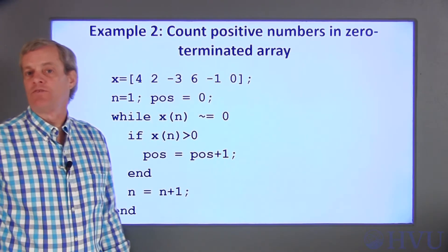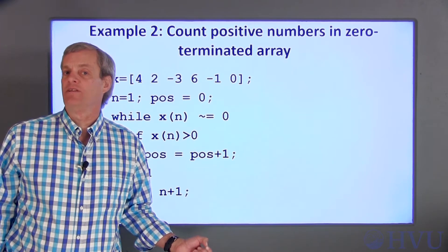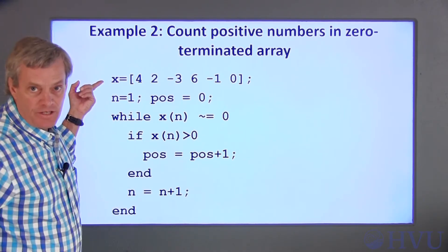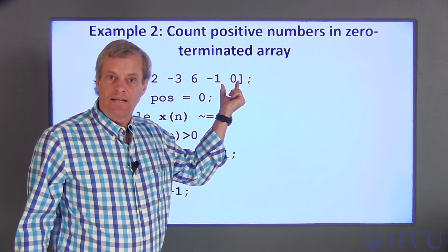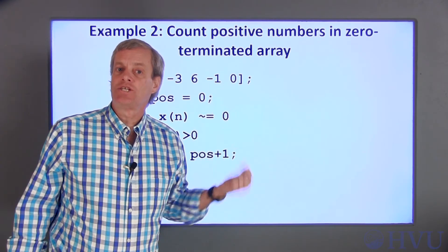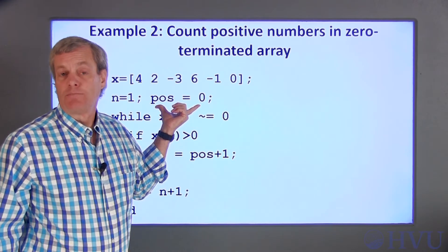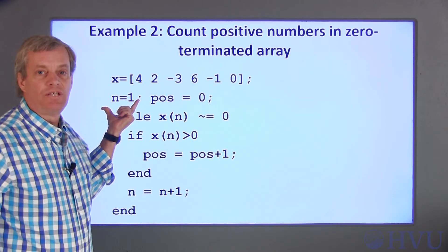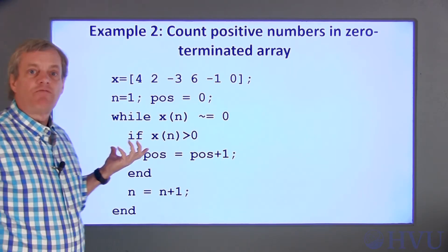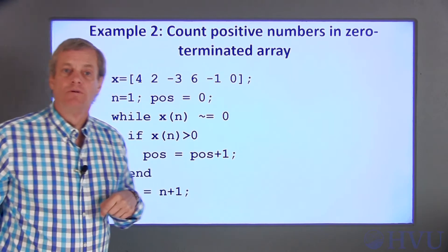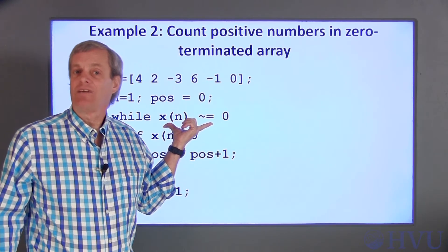The next example is to count the number of positive values in an array terminated with a 0. That means the last element should be 0 and no other element is 0. I start by initializing an array named x. I need to calculate the number of positive values, and the last element being 0 gives me a condition to terminate the while loop. I'll initialize variables named pos, to count positive values found, and n, used as a counter to work through the elements of x. The condition for terminating the while loop will be when x of k is equal to 0, so the loop continues as long as x of k is not equal to 0.